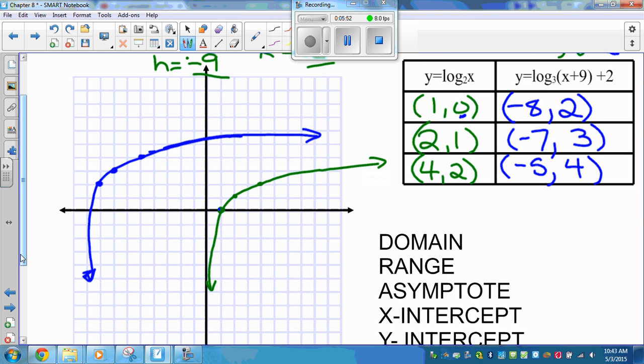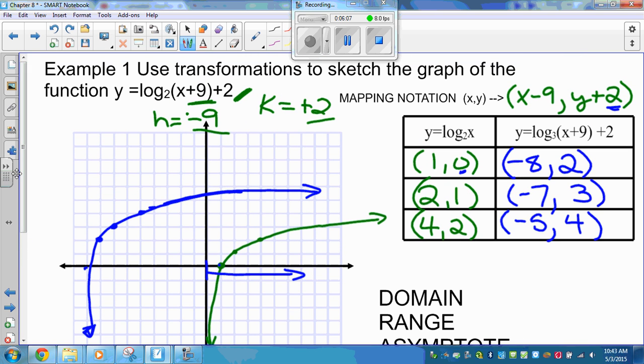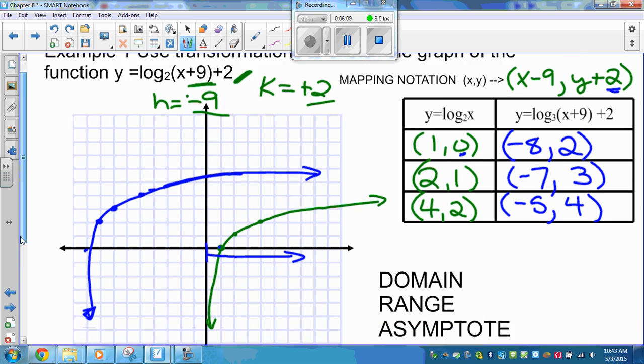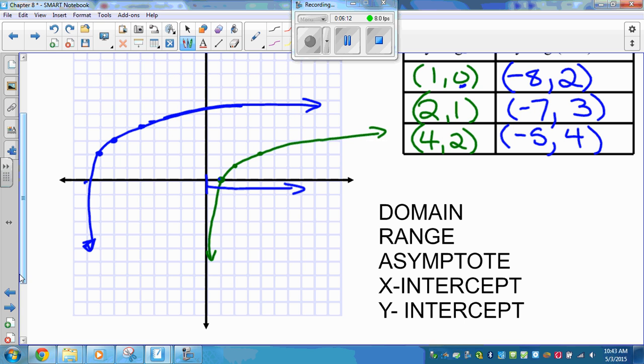So, a couple things about this new graph. Its domain. Normally, the domain is always X is greater than 0, but we've shifted that all the way over here. We've shifted it, in fact, 9 units over. We have shifted it, in other words, H units over. So my domain is all X, such that X is greater than negative 9, X is a member of the reals. My range, I could have any value of Y, all Y, such that Y is a member of the reals. My asymptote, I have a vertical asymptote at X equals negative 9.